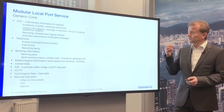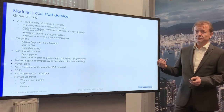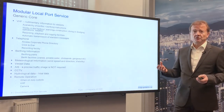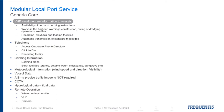From this perspective, a local port service could contain a generic core which includes VHF maritime voice communication to give rudimentary information to vessels — such as availability of berth, announcement of works performed in the harbour, warnings about construction, diving, and dredging activities. It should also provide recording, playback and logging facility, and possibly even automatic transmission of standard messages on certain channels.